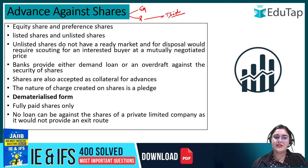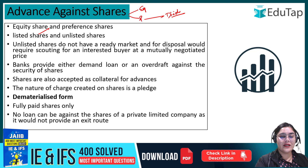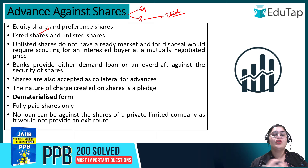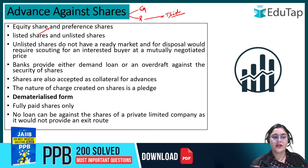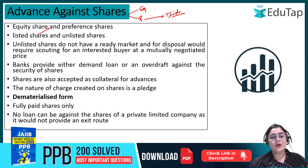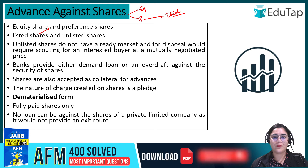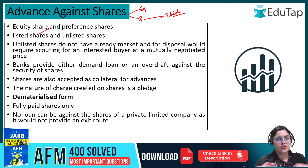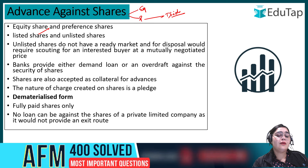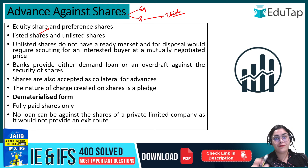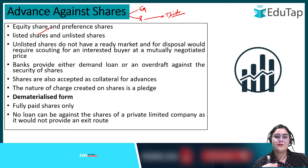Then there are listed shares and unlisted shares. Listed shares are the ones listed on a stock exchange, while unlisted shares are not listed on any stock exchange. For unlisted shares, there is no ready market available for buying and selling — you have to find an interested buyer at a mutually negotiated price, as opposed to listed shares where you can simply use apps like Groww or Zerodha.